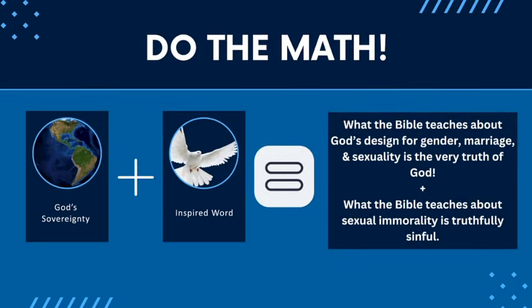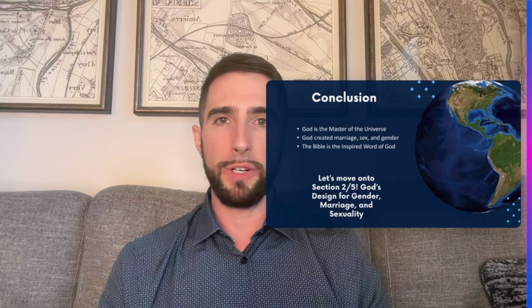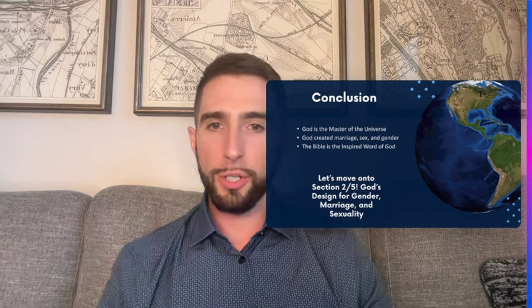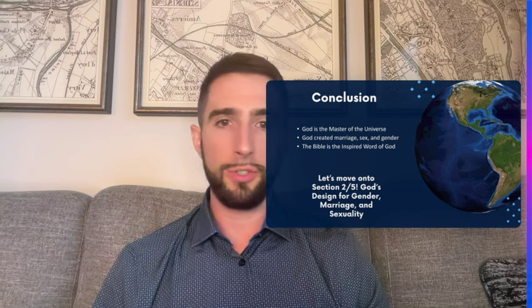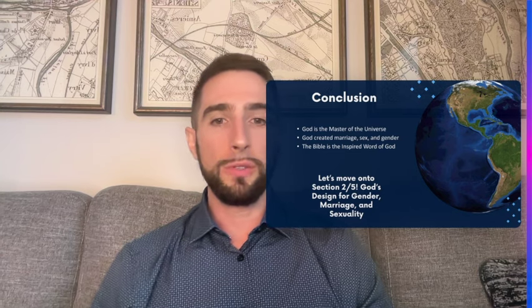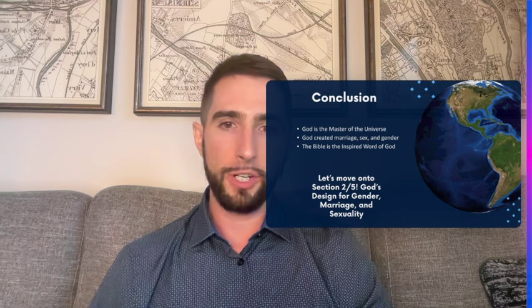It's basic math: God's sovereignty, plus the fact that all of the Bible is inspired — it's the inspired word of God — equals this: what the Bible teaches about God's design for gender, marriage, and sexuality is the very truth of God. And what the Bible tells us about sexual immorality is truthfully sinful. In conclusion, God is master of the whole entire universe. He created this planet and everything in it. We are creations. He is the creator. God created marriage. God created sex. God created the two genders. There are only two genders. The Bible is the inspired word of God.